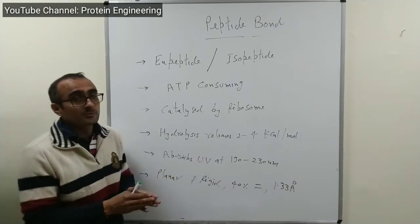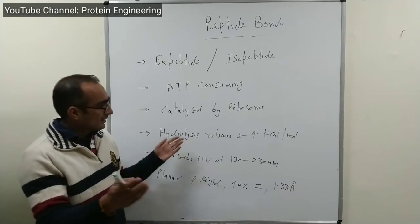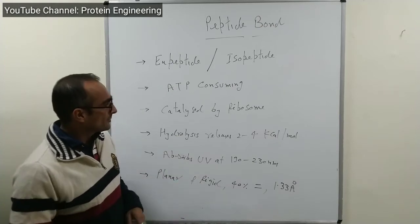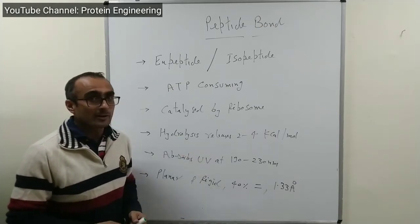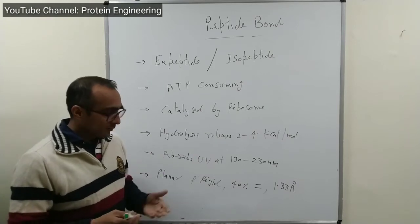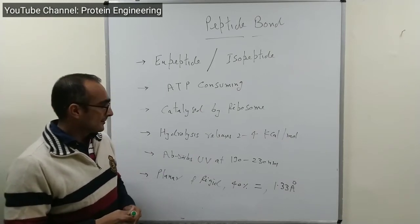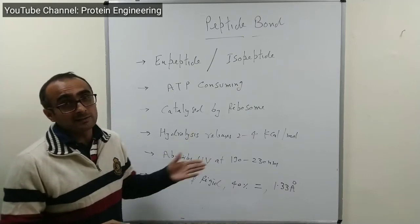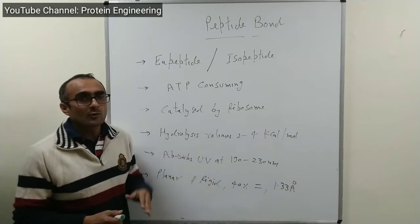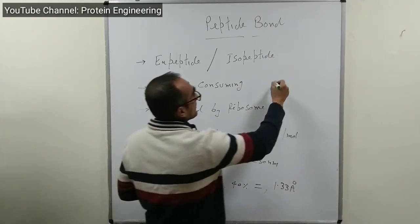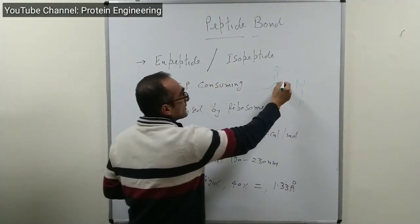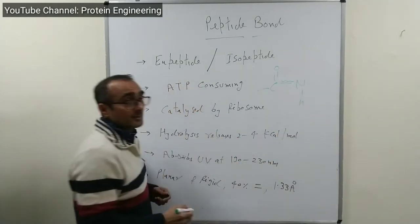As a result of peptide bond hydrolysis, two amino acids are separated, generating new N-terminal and C-terminal groups, and releasing around two to four kilocalories per mole. The peptide bond also absorbs in the UV range from 190 to 230 nanometers. The peptide bond is planar in nature — the C=O and N-H groups are in the same plane. It is rigid because the C-N bond in the peptide bond is not a simple single bond; rather, it has acquired a partial double bond character.